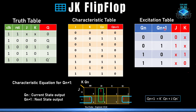For the JK flip-flop excitation table: when current state is 0 and next state should be 0, J=0 and K=X. When current state is 0 and next state should be 1, J=1 and K=X — even with K=1 the toggle would still change the output to 1. When current state is 1 and next state should be 0, K=1 and J=X. When current state is 1 and next state should remain 1, K=0 and J=X.